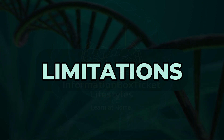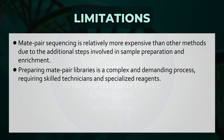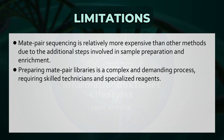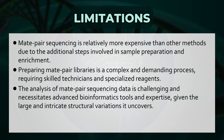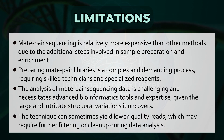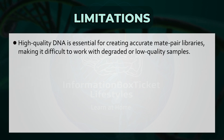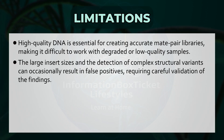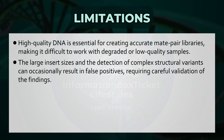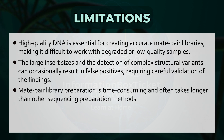Limitations of Mate Pair Sequencing. Mate pair sequencing is relatively more expensive than other methods due to the additional steps involved in sample preparation and enrichment. Preparing mate pair libraries is a complex and demanding process, requiring skilled technicians and specialized reagents. The analysis of mate pair sequencing data is challenging and necessitates advanced bioinformatics tools and expertise, given the large and intricate structural variations it uncovers. The technique can sometimes yield lower-quality reads, requiring further filtering or cleanup. High-quality DNA is essential for creating accurate mate pair libraries, making it difficult to work with degraded or low-quality samples. The large insert sizes and detection of complex structural variants can occasionally result in false positives, requiring careful validation. Finally, mate pair library preparation is time-consuming and often takes longer than other sequencing preparation methods.